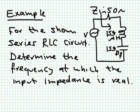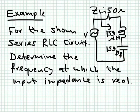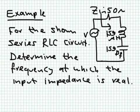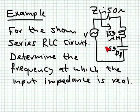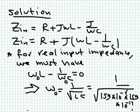Here is an example: a circuit with a 50-ohm resistor, a 159-microhenry inductor, and a 159-picofarad capacitor. We want to determine the frequency at which the input impedance is purely real — that is, the current and voltage are in phase. The input impedance is 50 + jωL − j/ωC. For this to be real, the imaginary part must cancel out.